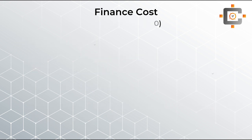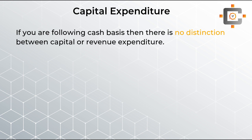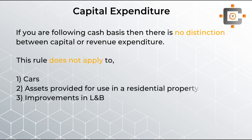Now let's come to the next concept, which is capital expenditure. Capital expenditure deduction is available because under the cash basis there is no distinction between capital expenditure and revenue expenditure. However, there are three capital expenditures which are not allowed: the first is the car, the second is residential property capital expenditure, and the third is land and building. Don't worry — there are separate treatments available for each of these, which we will cover.